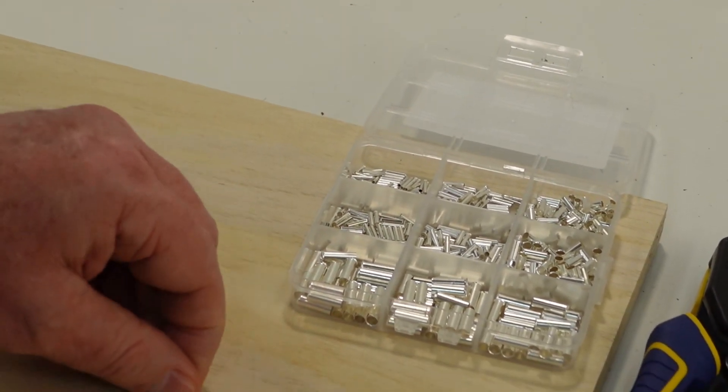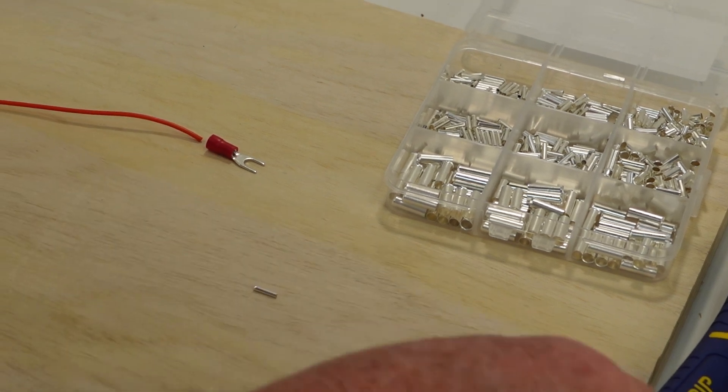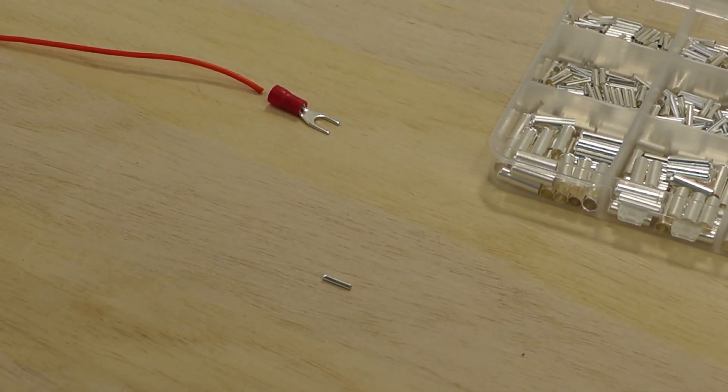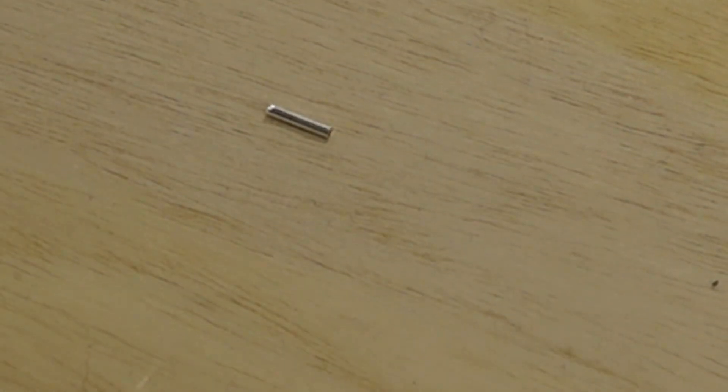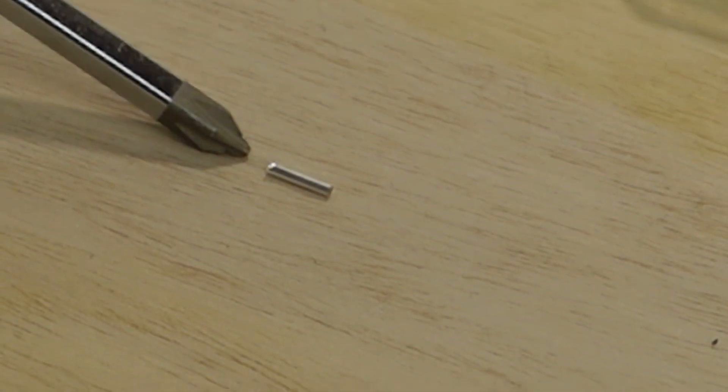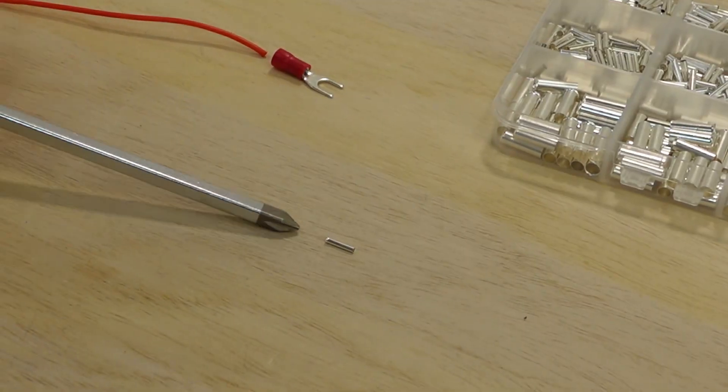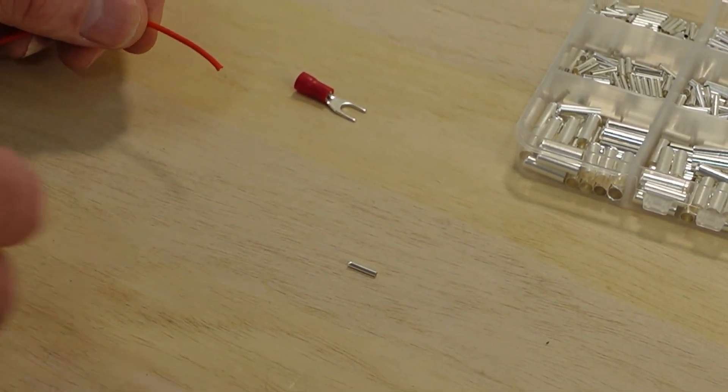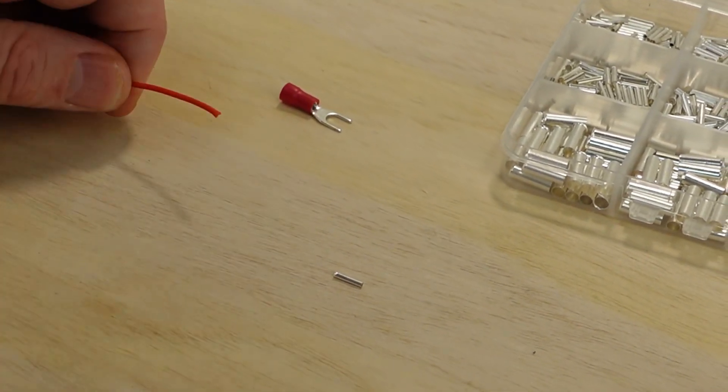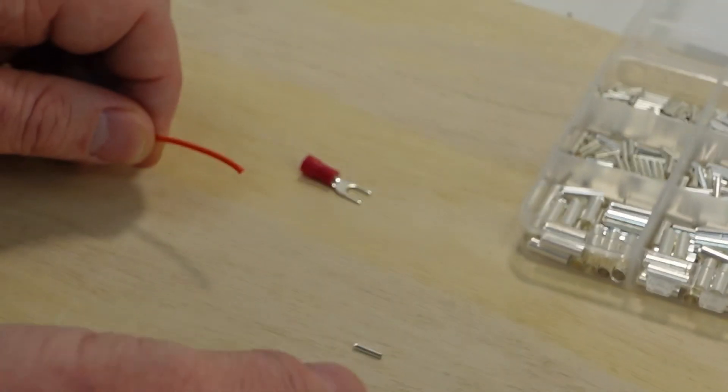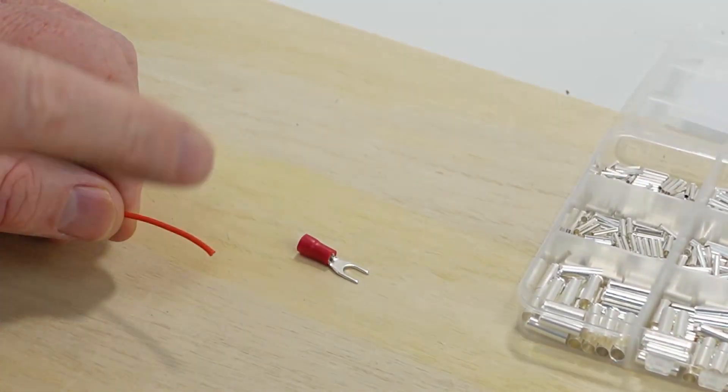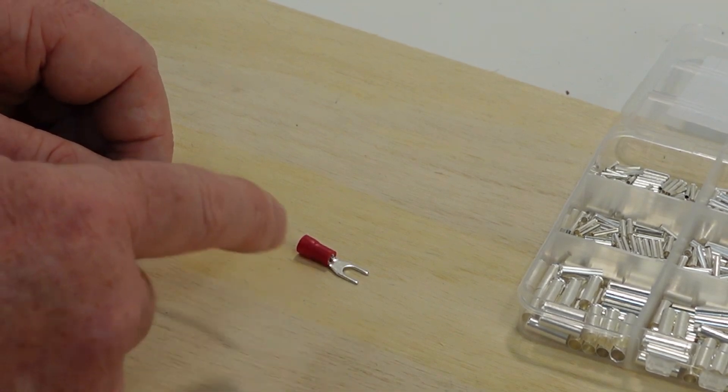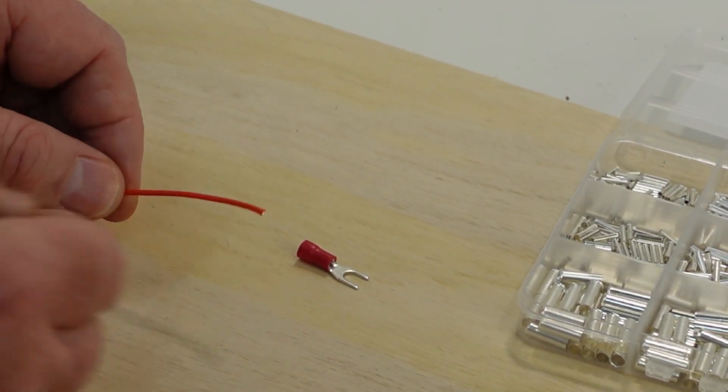But you can see here on these ferrules, there's a little flared end. And that little flared end should go toward the insulation. You don't want that at the other end. And what the ferrule does, we use these ferrules a lot when we're doing connections to spring clip terminals where you kind of open up the spring loaded lever and then you put your wire in there and the ferrules make a nice connection with that. So that's typically what we use them for.